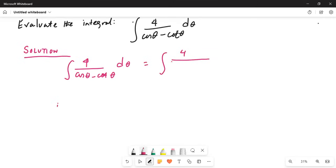Wait, my mistake. Let me clarify that. This is cosecant theta, and this one also should be cosecant. So this is actually cosecant theta.